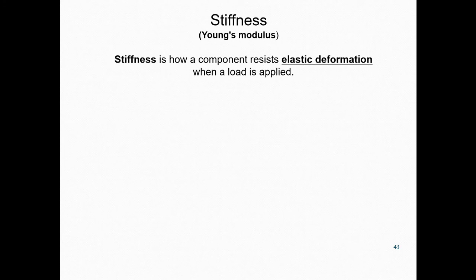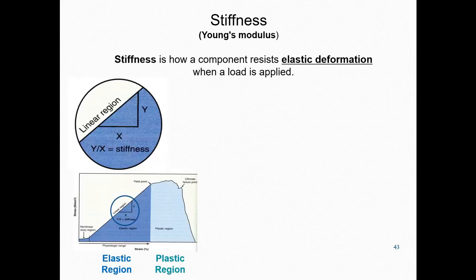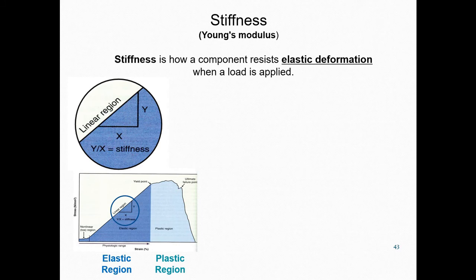The term stiffness has a specific meaning. Stiffness is how a component resists elastic deformation when a load is applied. Stiffness is a property measured within the elastic region of the material — calculated in the linear region of the stress-strain curve. Stiffness relates to how a material deforms under load while still being able to return to its original shape once the load is removed. Stiffness is not the same as the strength of a material. Strength is a measure of the stress that can be applied before it permanently deforms — its yield strength — or until the material breaks, known as its tensile strength.